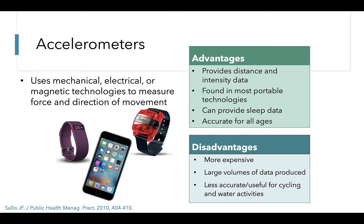Accelerometers provide higher quality data on both distance and intensity of movement. Nowadays, most people already have accelerometers in their mobile devices, Apple watches, and Fitbits, and these data can be used for assessment purposes. Accelerometers can also provide sleep data and work well for all ages. However, they can be more expensive and can produce large volumes of data that can be difficult to manage and interpret. They are also less accurate and useful for cycling and water activities.